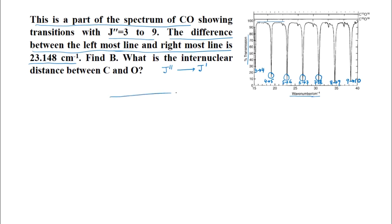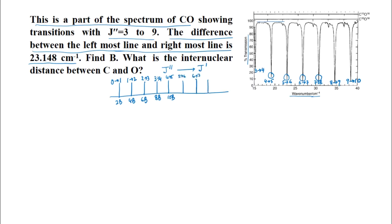Let us look at the rotational spectrum. The first line (0→1) comes at 2B, then the 1→2 transition at 4B, 2→3 at 6B, and 3→4 at 8B. So the leftmost line in this partial spectrum is actually the fourth line in the rotational spectrum. Then we have lines: 4→5 at 10B, 5→6 at 12B, 6→7 at 14B, 7→8 at 16B, 8→9 at 18B, and 9→10 at 20B.